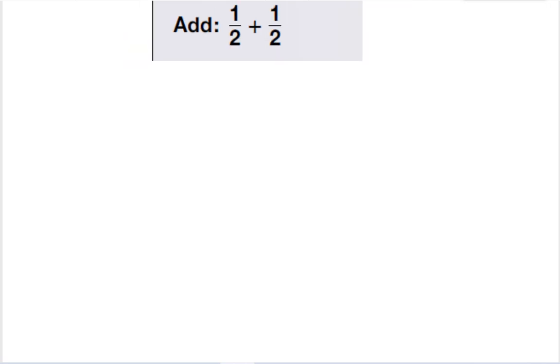How about 1 half plus 1 half. Well, I'm going to add them together. The denominator stays the same. 1 plus 1 is 2, so I have 2 halves. And we know if the top number and bottom number are the same, it equals 1 whole.